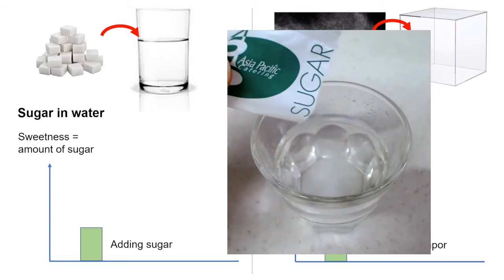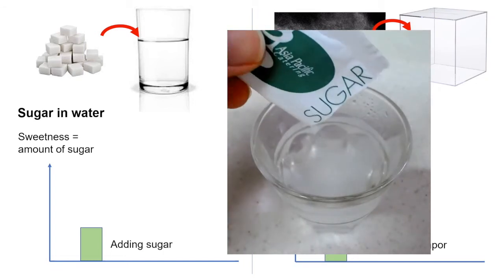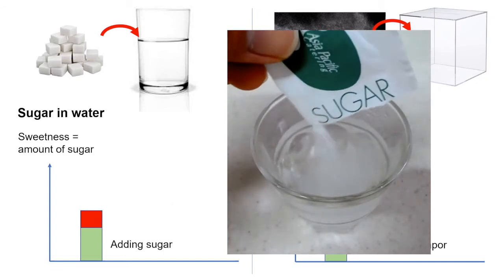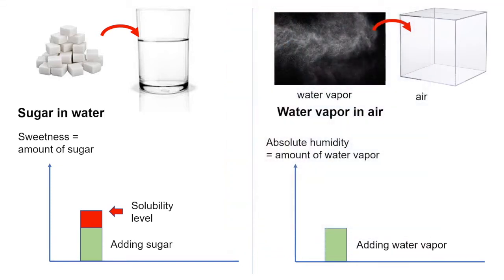If you now keep on adding sugar into your drink, at some point you will reach the solubility limit, when the sugar will no longer dissolve. In the case of humidity, it is possible to add more water vapor into air until a point called saturation, which is the maximum amount of water vapor that air can hold. Beyond this, the water will condense out as liquid.